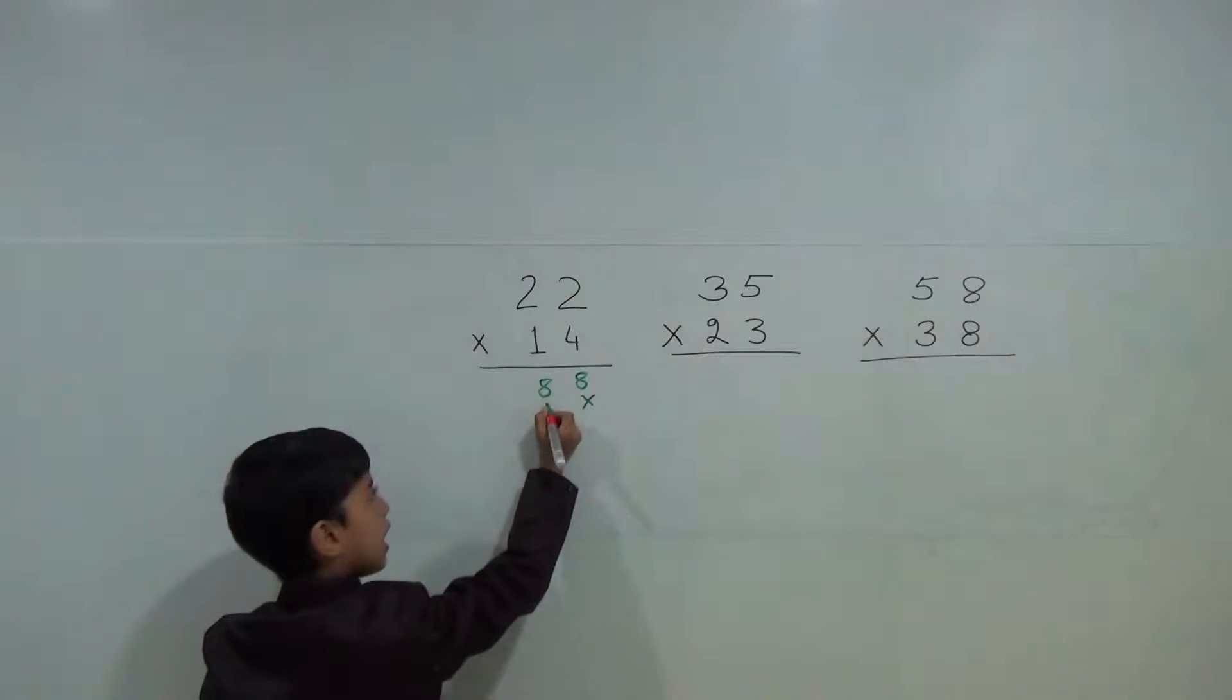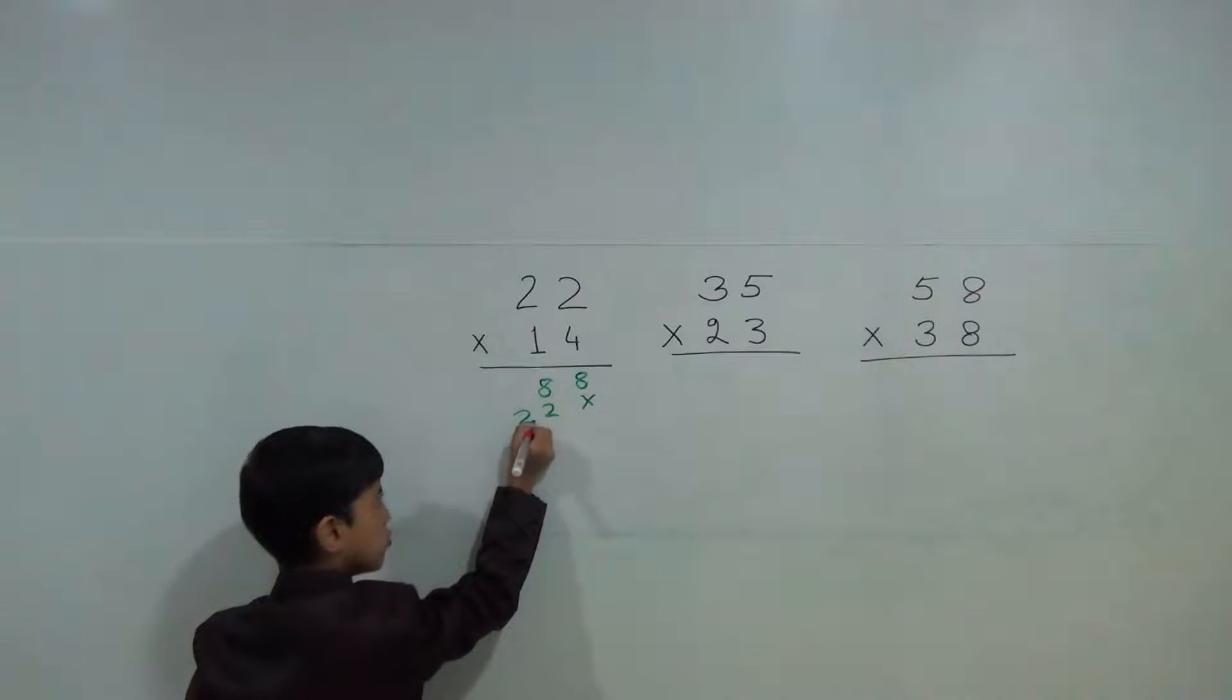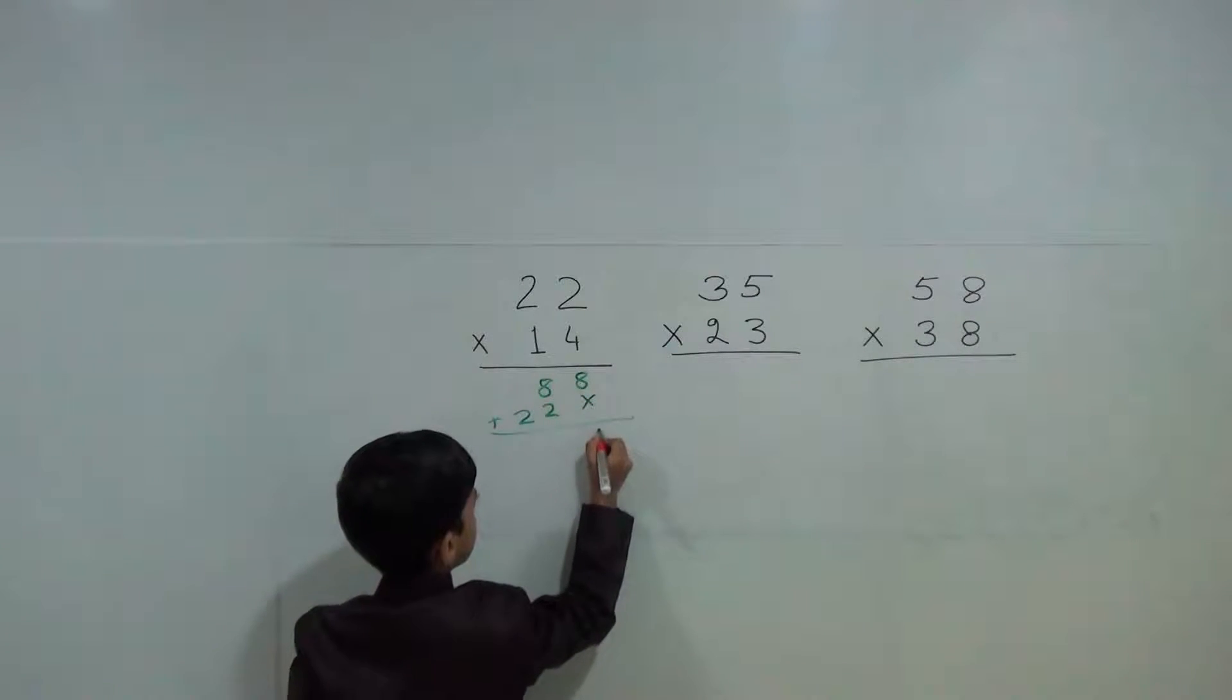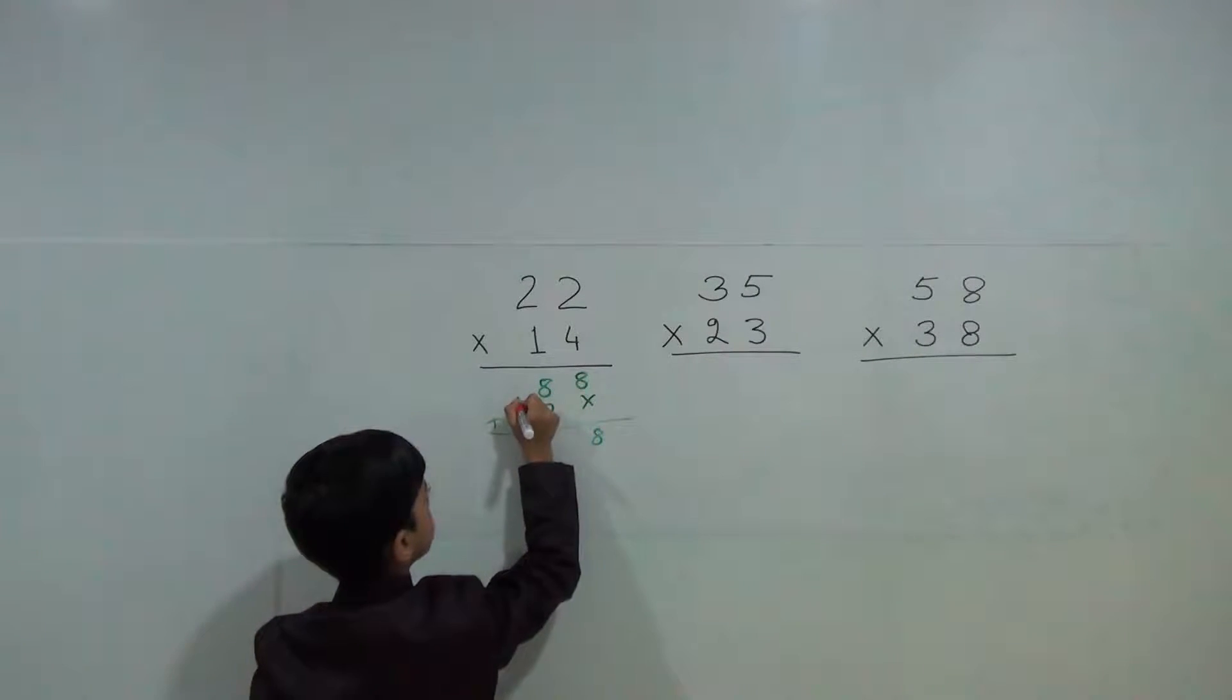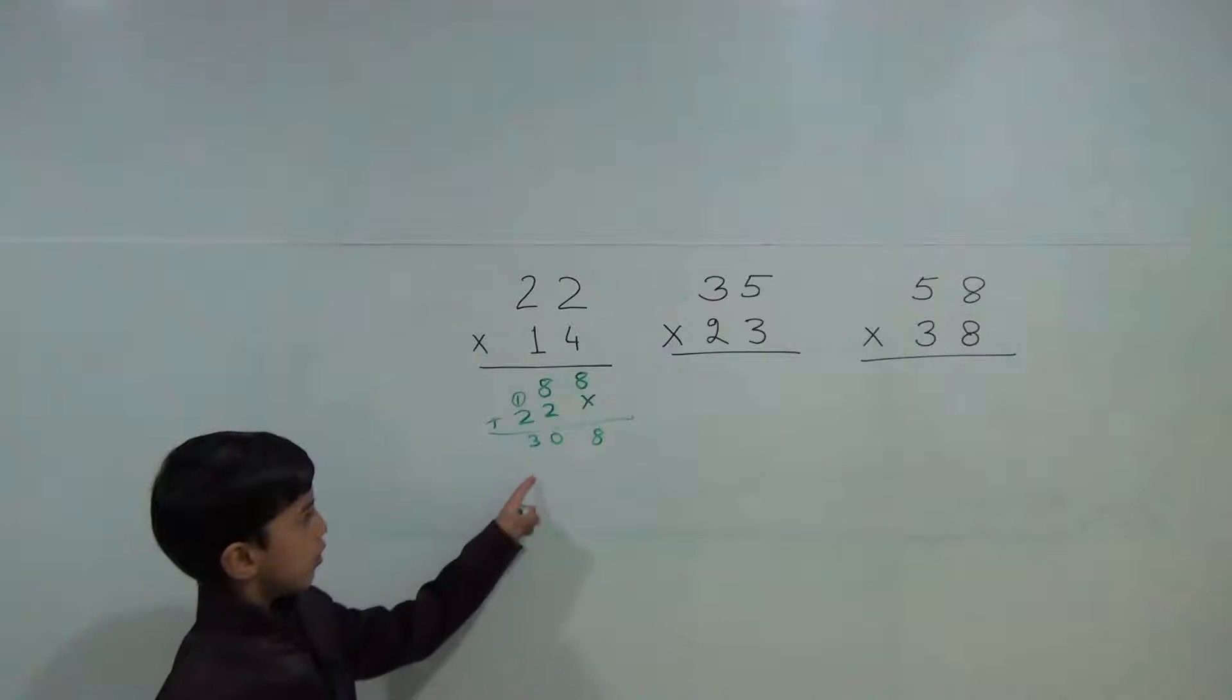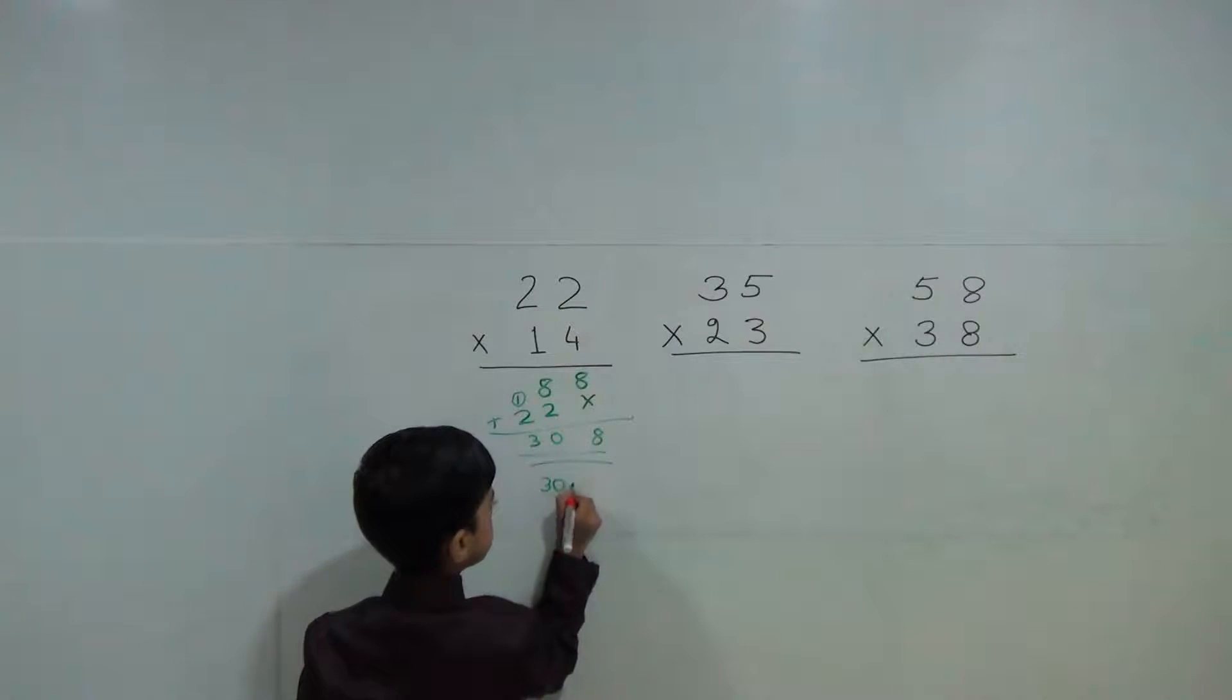Then 1 times 2 are 2 and 1 times 2 are 2. So now we will add 8, 10, 1 carry over, 0 and 3. Now answer is 308.